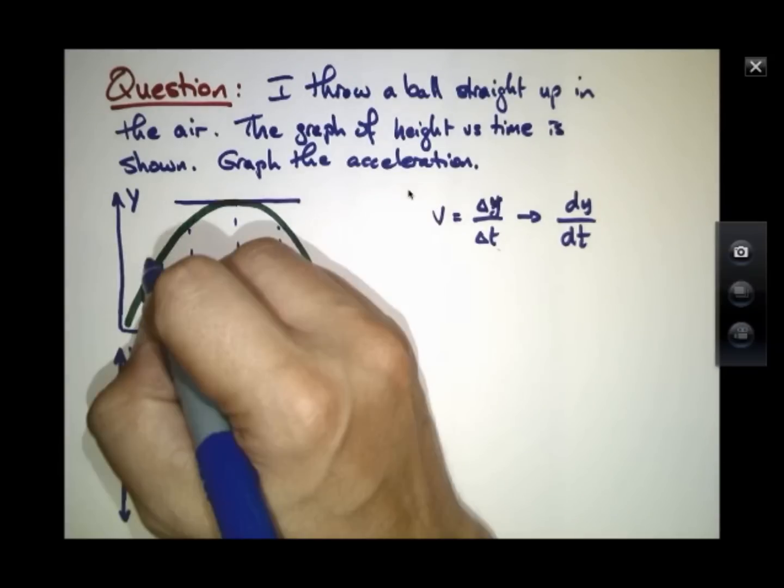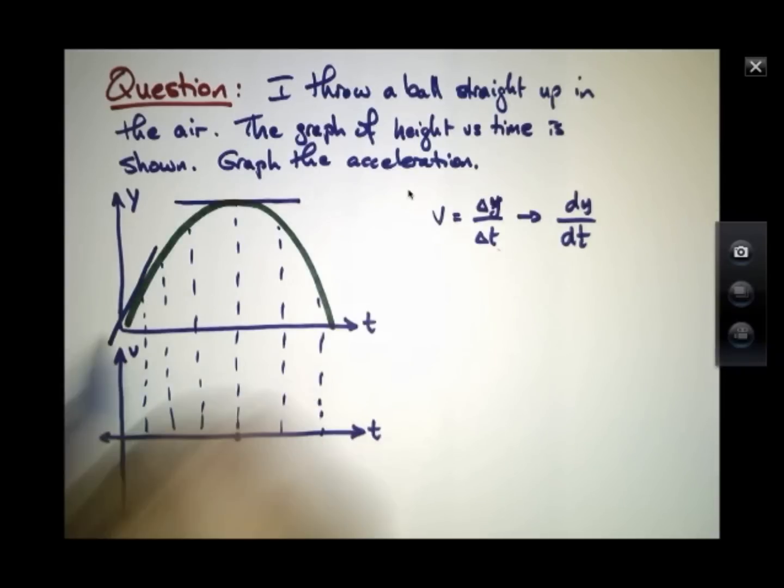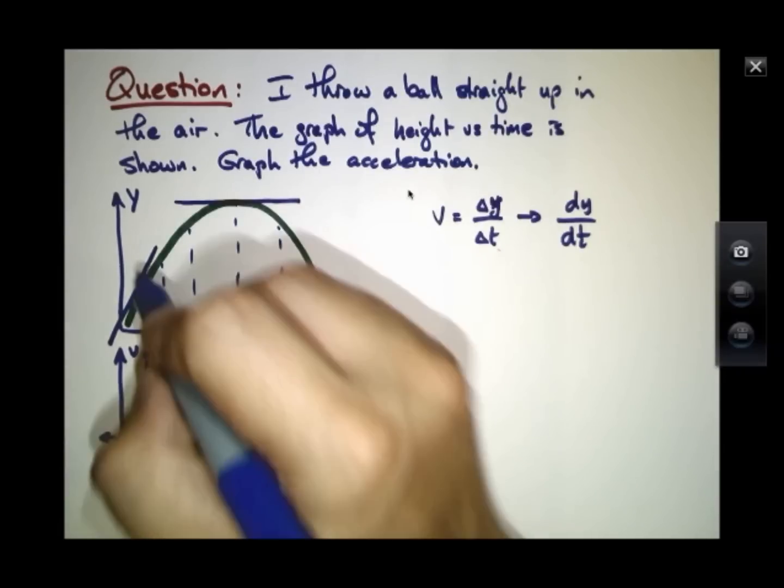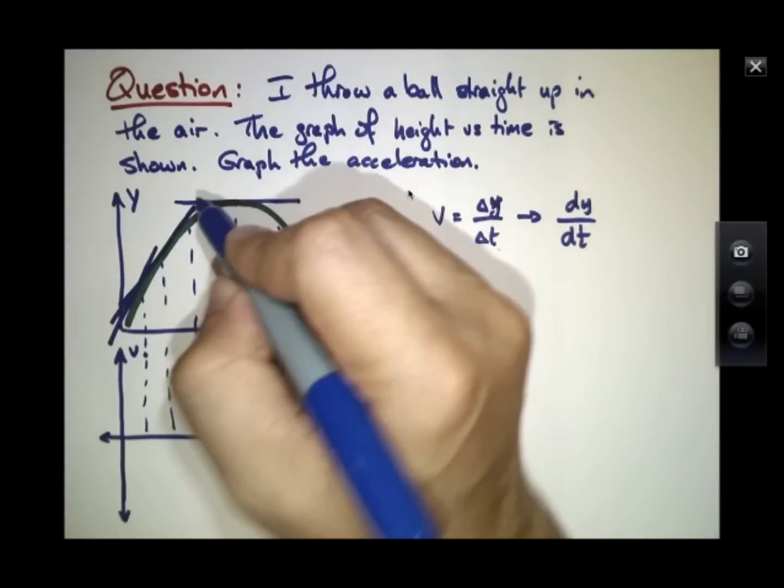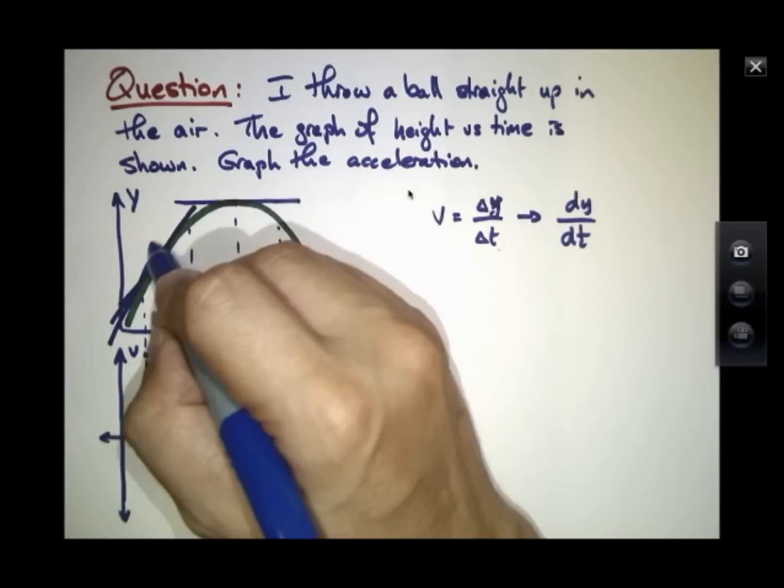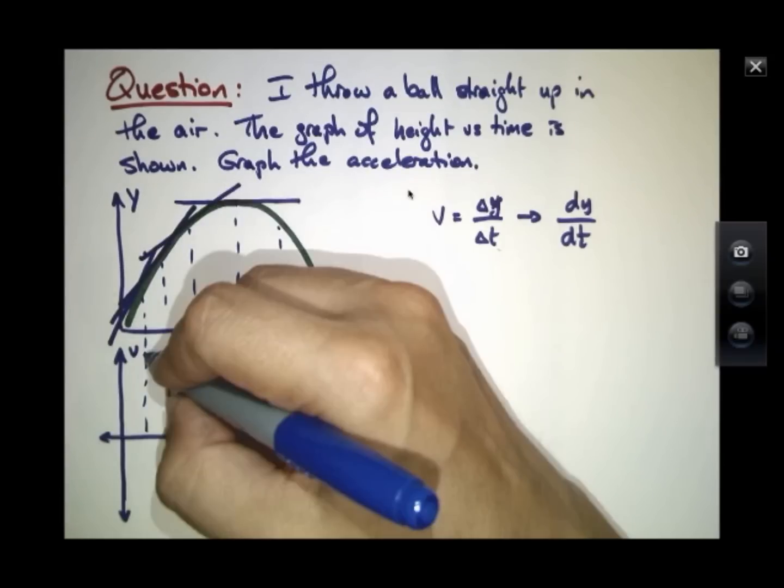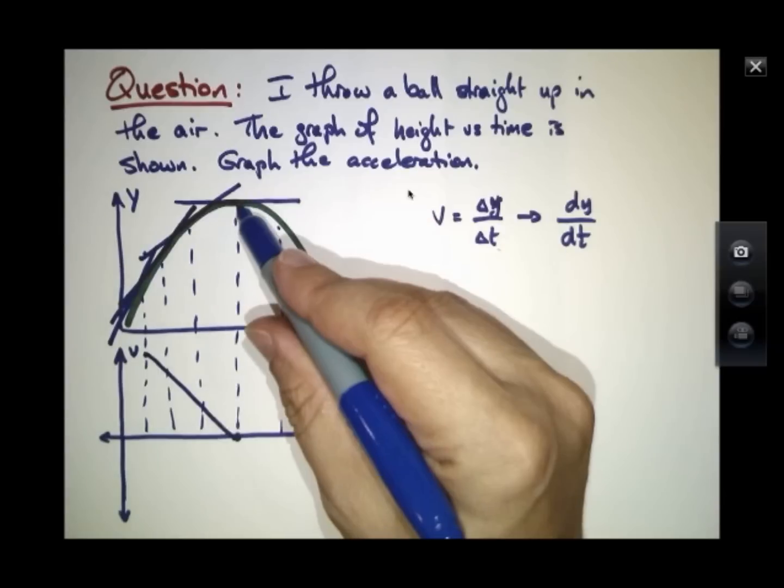Over here, the tangent line might look something like this. So it's got a slope that's very large and it's positive. And as I move along in time, I still see tangent lines that are sloped upward, but less so every time. So what's happening is the velocity is trending down until it gets to zero right there.